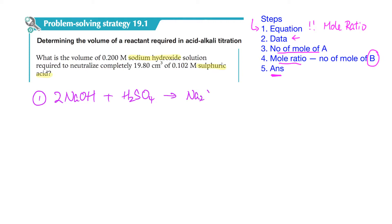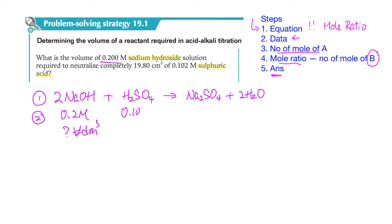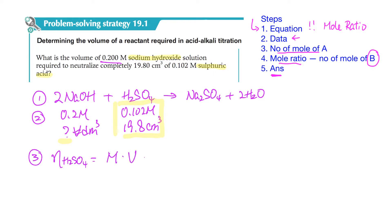For your own learning I will write all the steps here. The second part is the data. We put the data correspondingly: NaOH has 0.2 M, but we don't know the volume because that is what we're solving for. For H₂SO₄ it is 0.102 M and we have 19.8 cm³. So we have data for sulfuric acid but not a mole value for NaOH. In step 3 we find the number of moles of H₂SO₄ using n = MV: 0.102 × (19.8/1000).